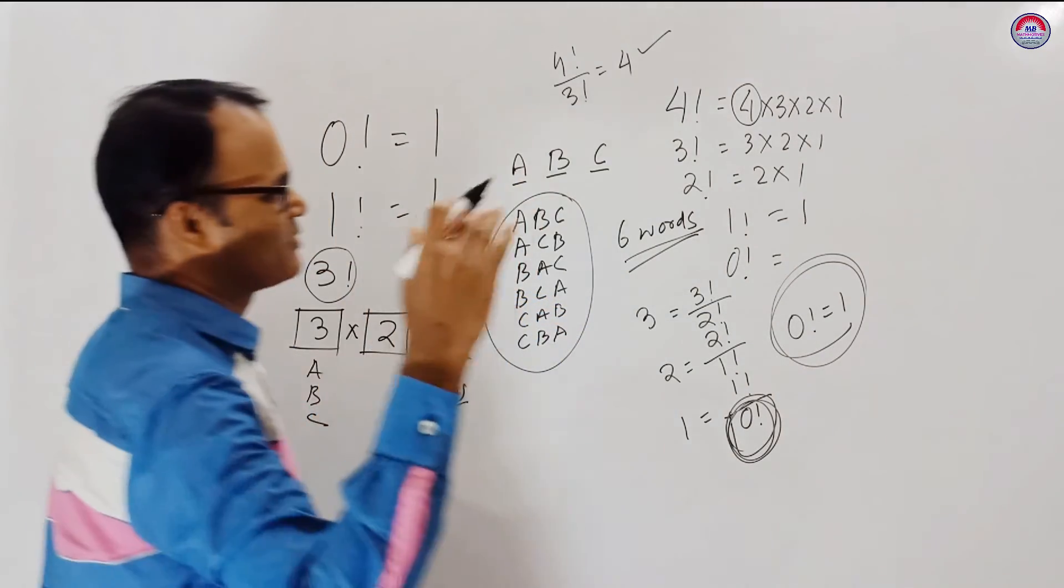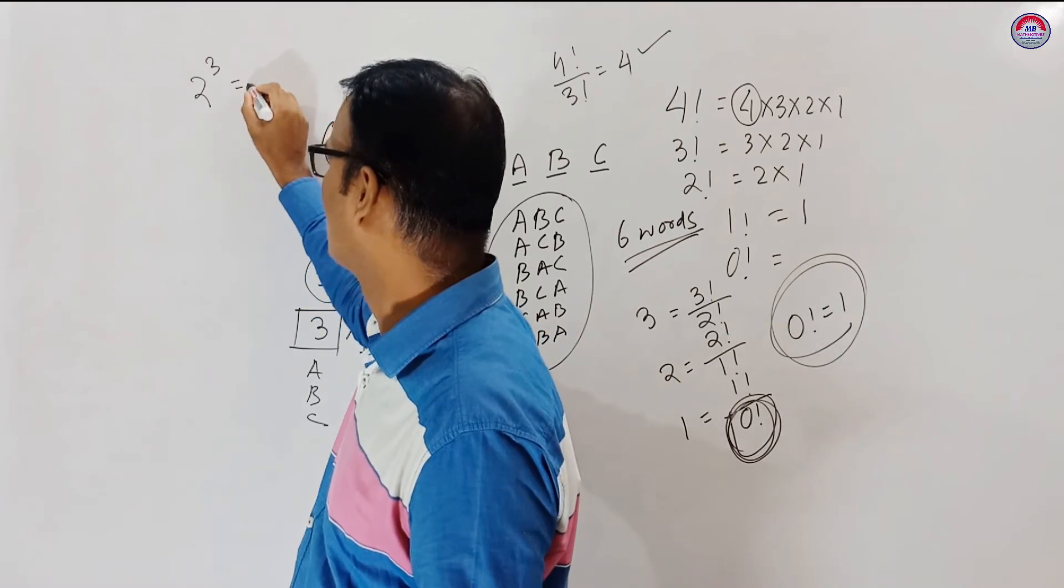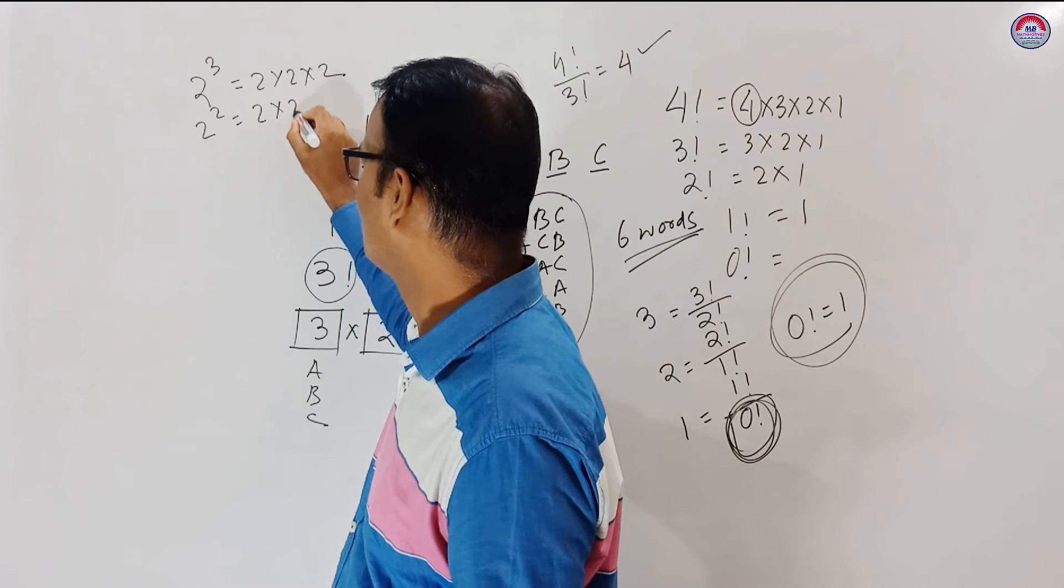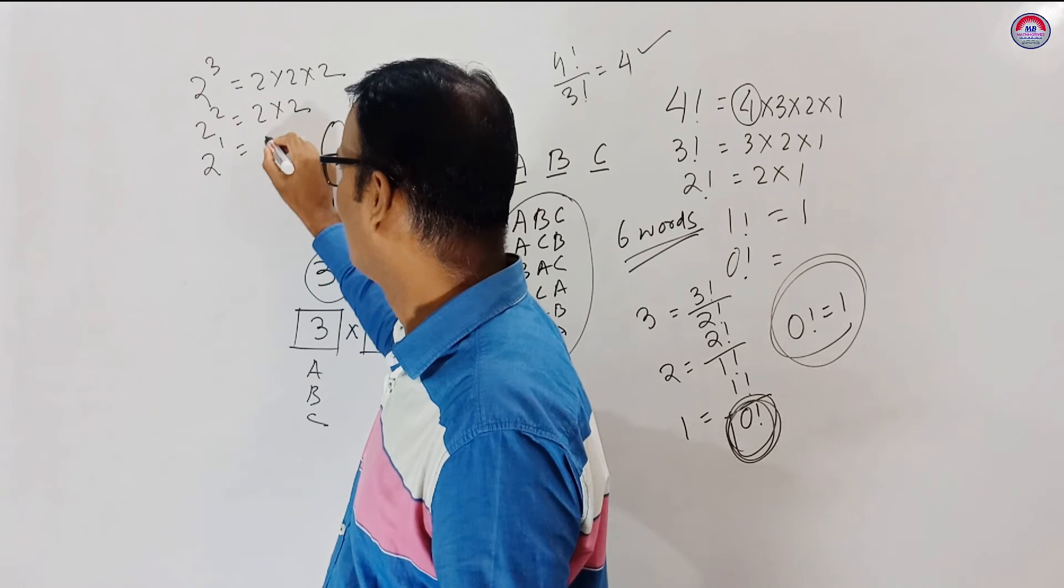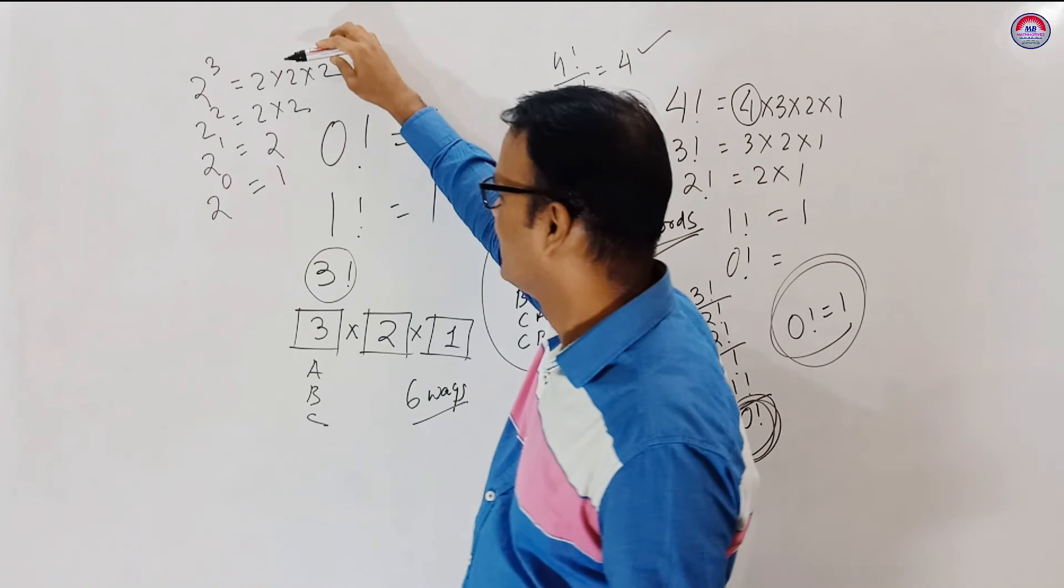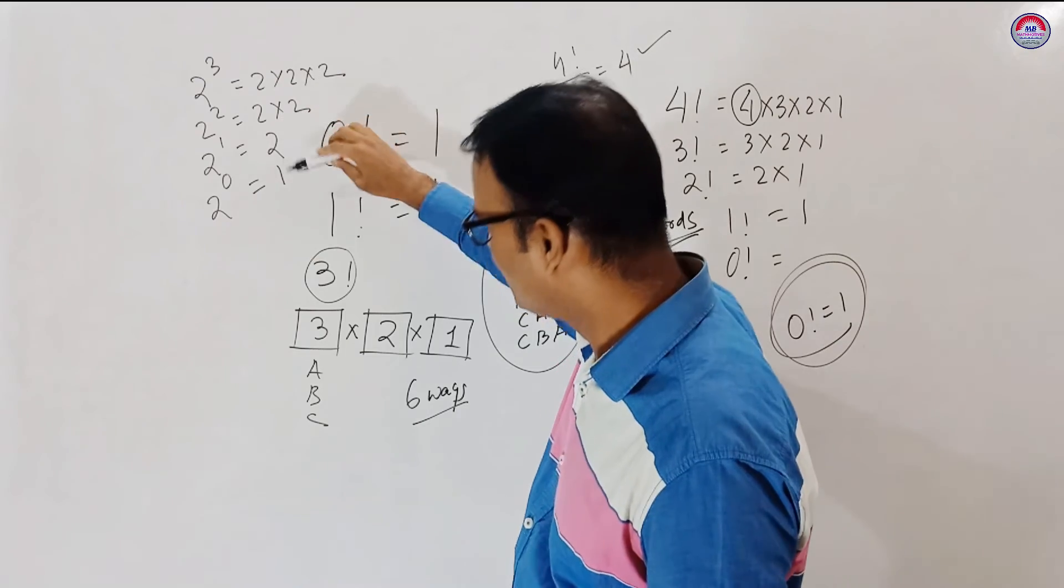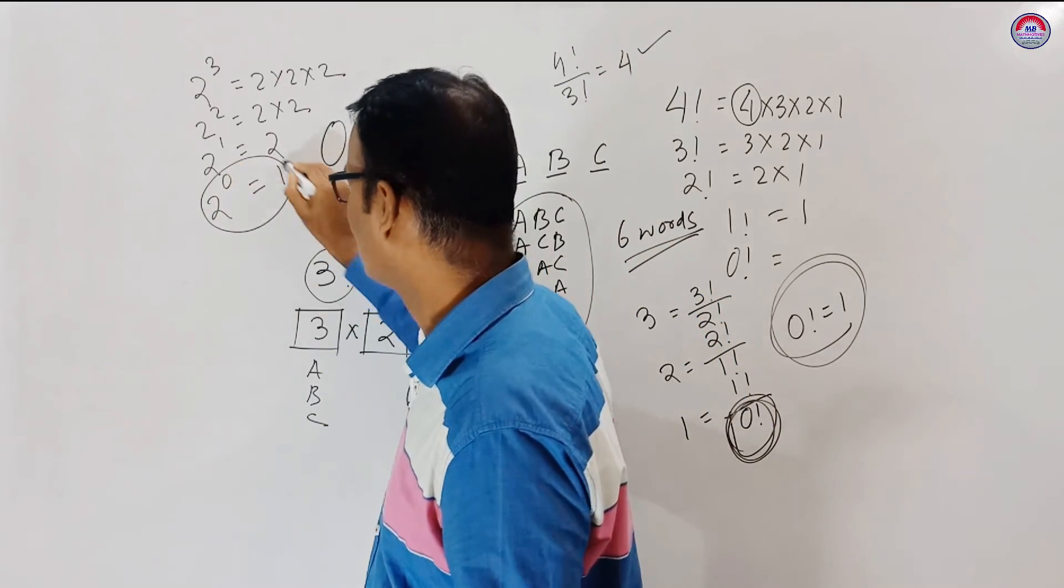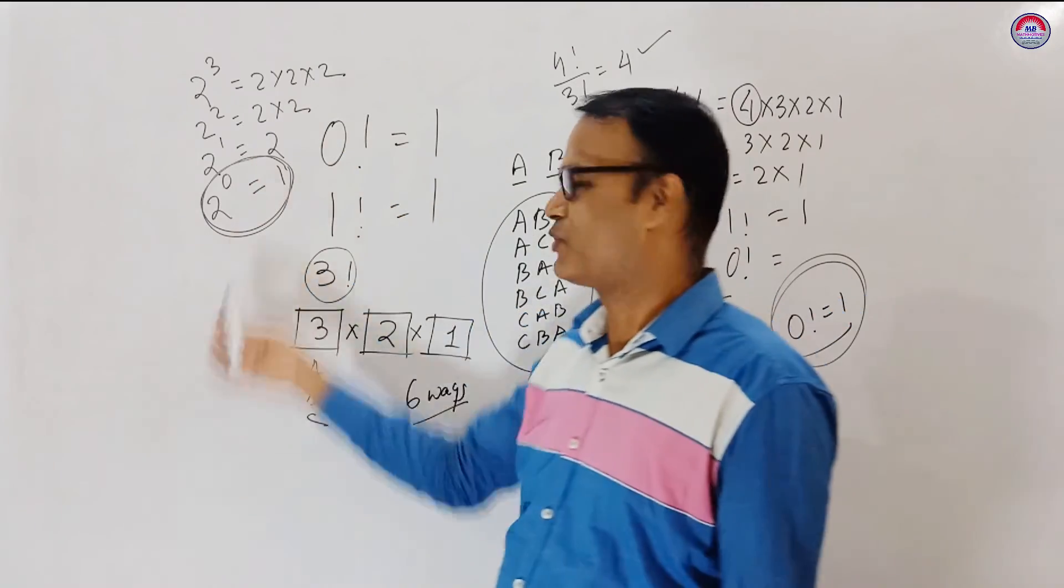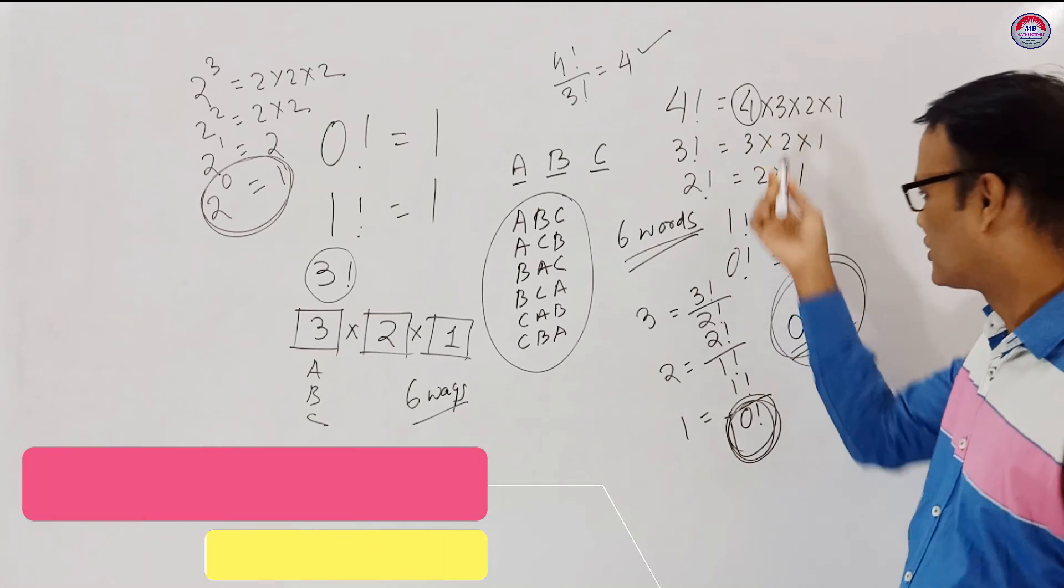Similarly you see in exponent power, you can write two cube is equal to two into two into two. Two square is equal to two times two. Two power one equal to two. You see in this process we just divide by two. So two power zero is also equal to one. This is a pattern in exponent. Similarly here in factorial case, zero factorial equal to one is also a pattern.